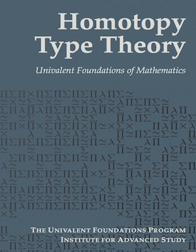Most importantly, given a path p of type a equals b, and a proof of some property P(a), the proof can be "transported" along the path p to yield a proof of the property P(b). Equivalently stated, an object of type P(a) can be turned into an object of type P(b). This corresponds to the substitution property of equality.